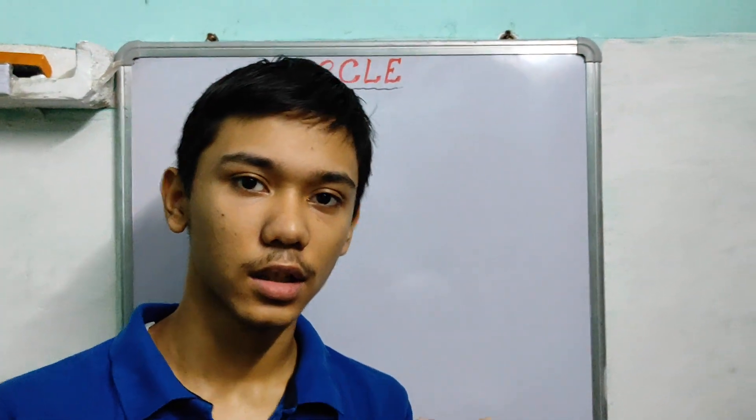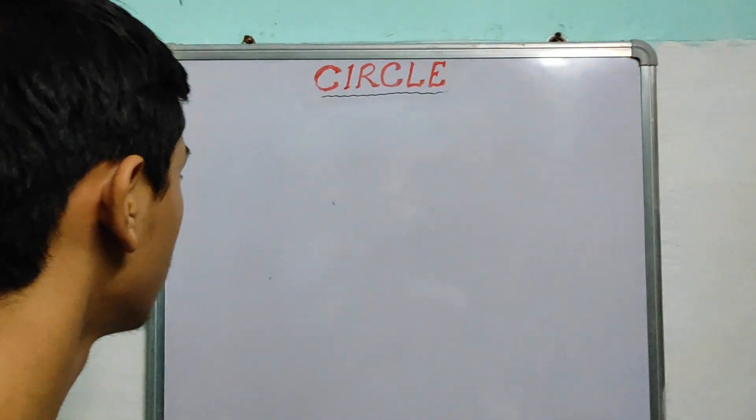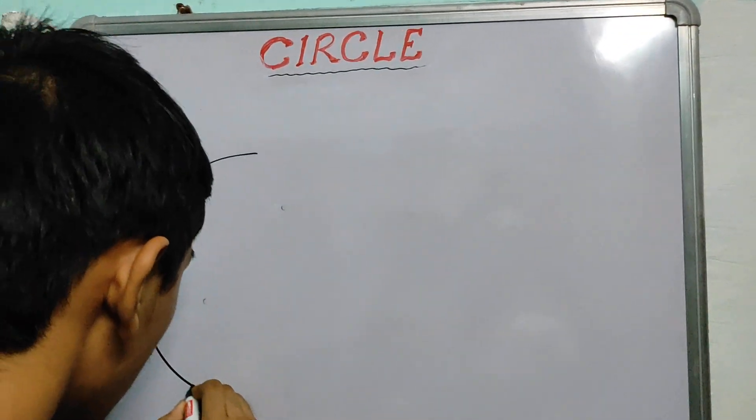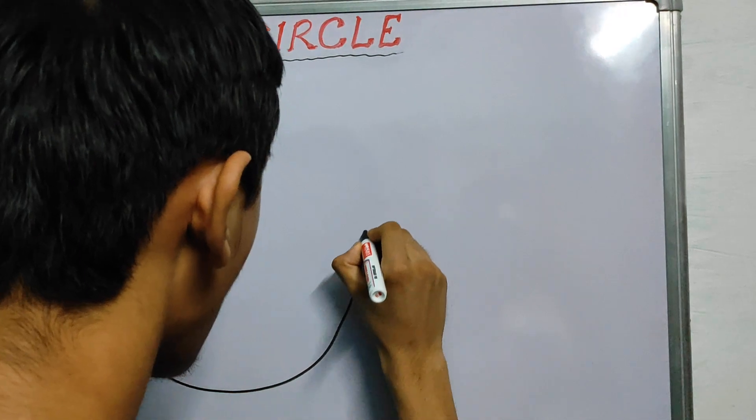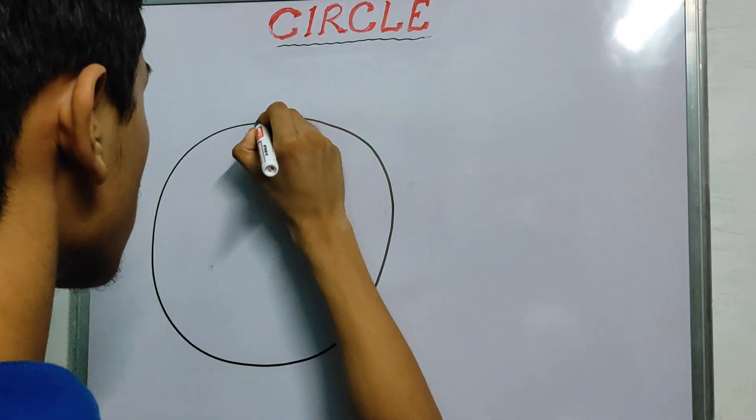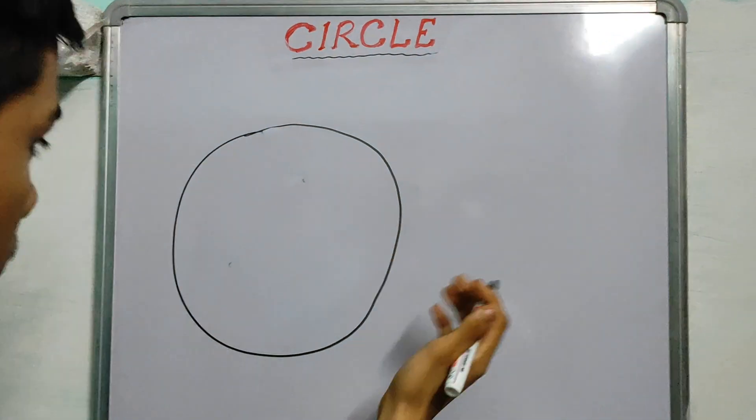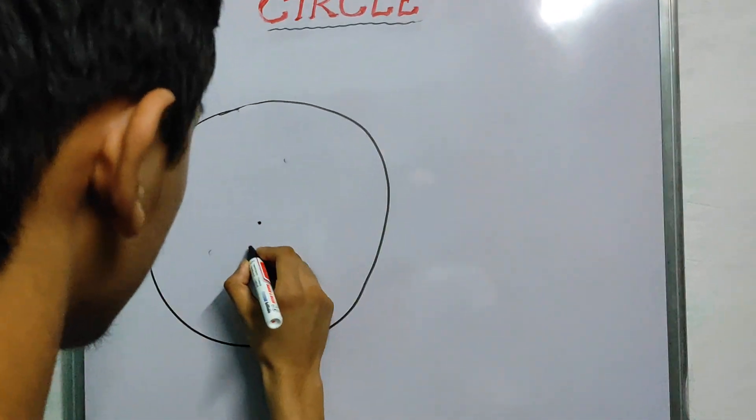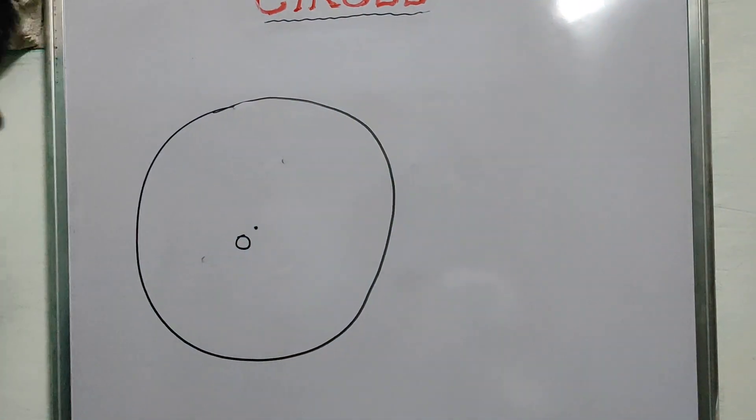Hi, so today we will talk about a very special line and how it behaves with a circle. So let me draw a circle. Now let me mark this center, let us call this O.